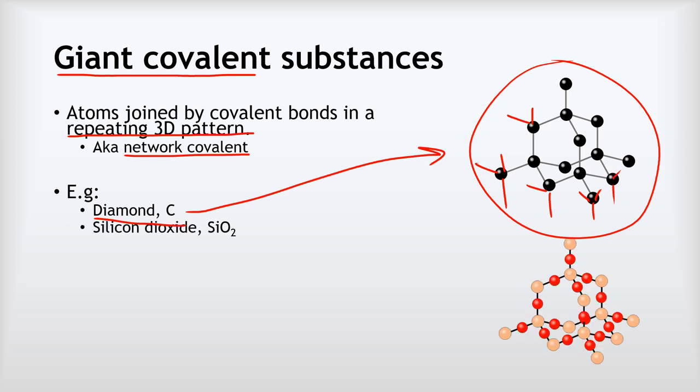Another example is silicon dioxide, SiO2, and this contains these beige silicon atoms and these red oxygen atoms in a two-to-one ratio, again in this repeating three-dimensional pattern that just goes on and on and on for millions of times in every direction.